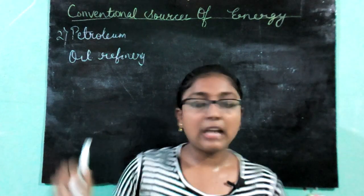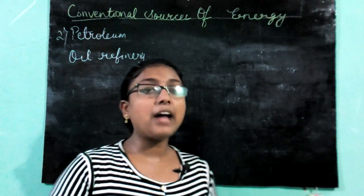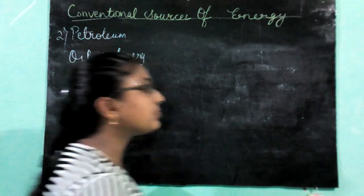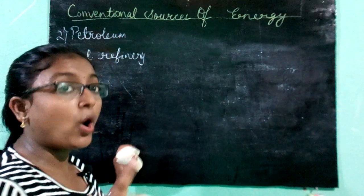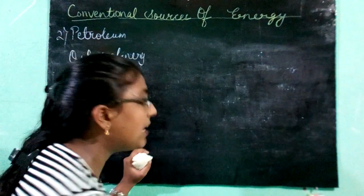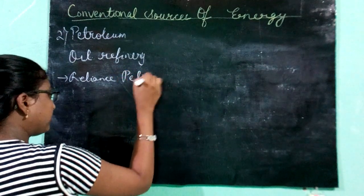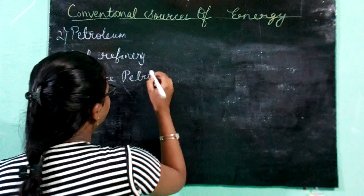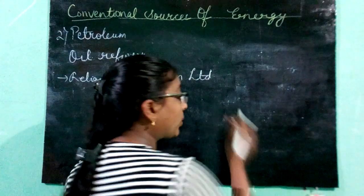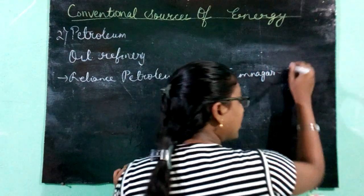In India, most of the refineries are under the public sector; only very few are under the private sector. The first oil refinery working in the private sector is Reliance Petroleum, and it is located at Jamnagar in Gujarat.